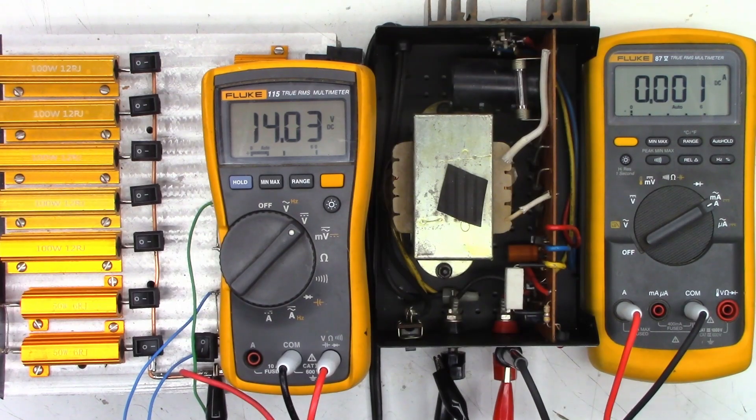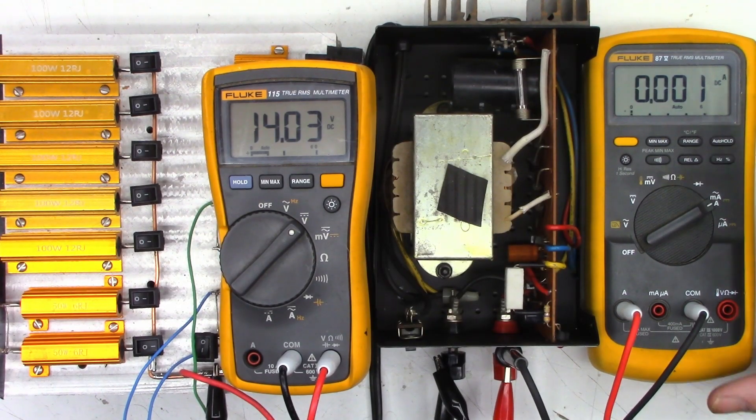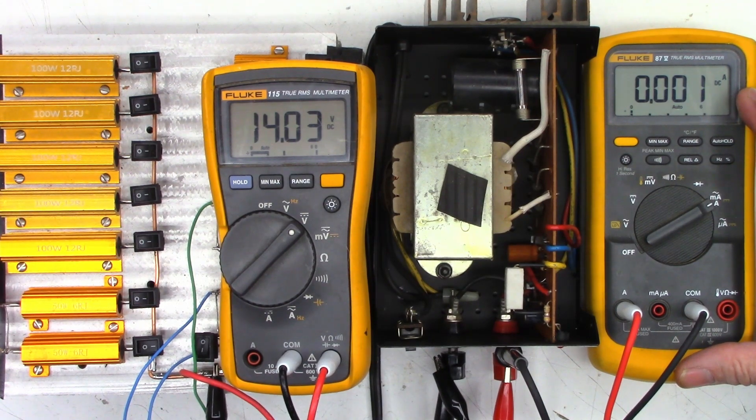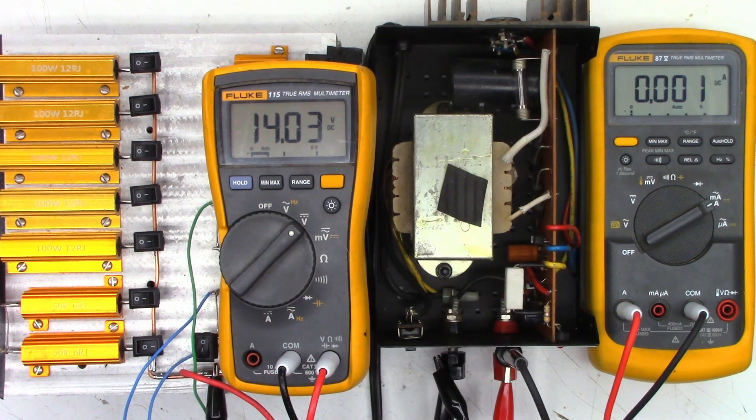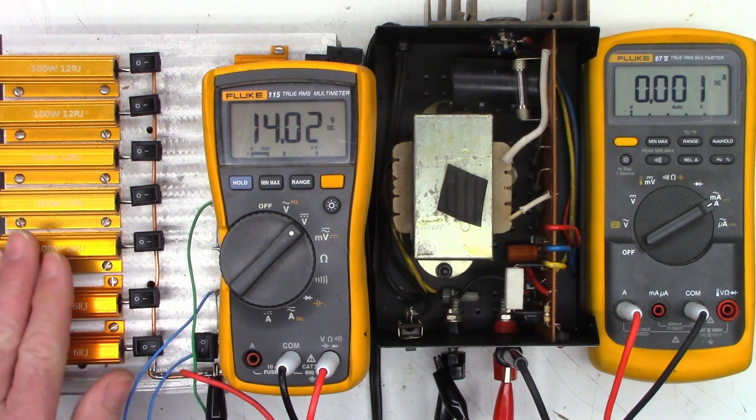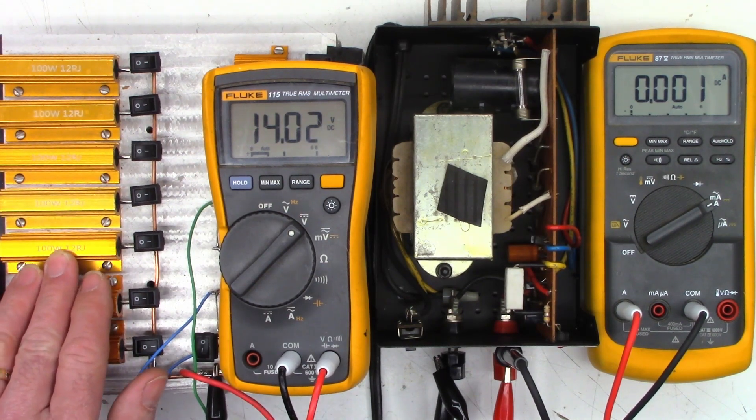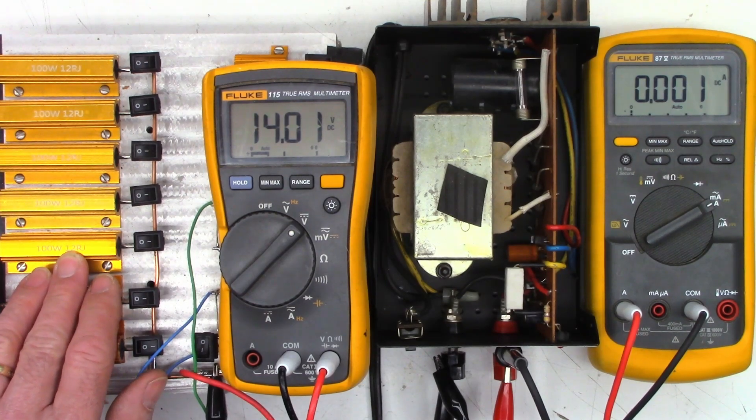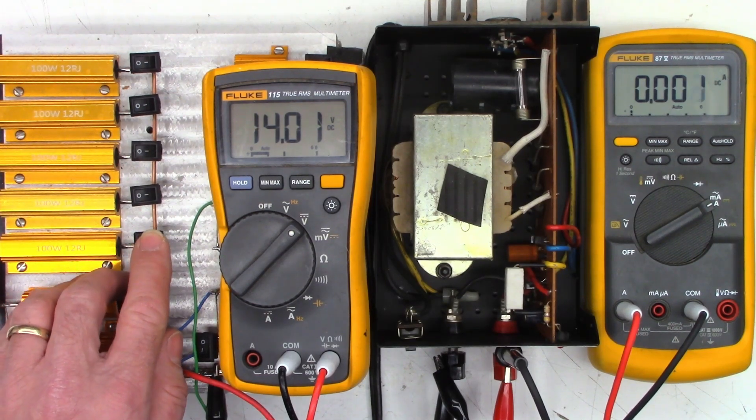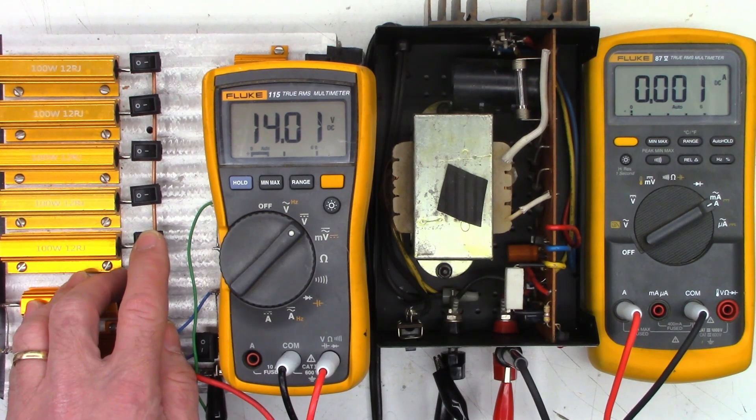Okay, so I've got my new fuse in the unit and I've got my Fluke 87 on the 10 amp current range right now. And I've got my 115 right here on the voltage. So I'm getting 14.02 volts out of this unit at the moment and I'm supplying 125 volts AC into this unit right now. So my dummy load over here, it's a bunch of 12 ohm, 100 watt resistors. So it's gonna be way overboard for this thing, but each resistor should provide just over one amp of current draw.